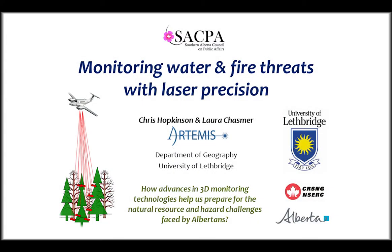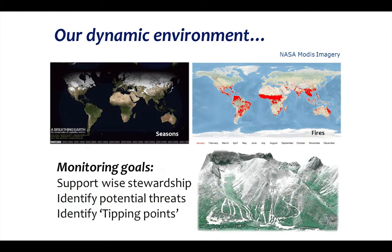We live in a very dynamic world, and as you can see from the satellite image sequences here, some of the cyclic behavior of the seasonal progression of snowpack and vegetation is clear, and also some of the random behavior associated with wildfires can both be represented in satellite imagery. These present one method of environmental monitoring — we can use satellite remote sensing or Earth observation.